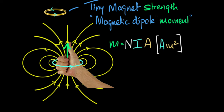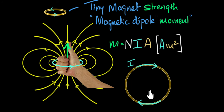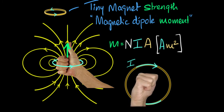Let's try an example. If we have a current carrying loop where the current flows in a particular direction in the plane of the screen, use your right hand: clasp it so the four fingers run in the direction of the current, and you'll find the thumb is pointing inwards. So in this case, the magnetic moment is pointing into the screen. Magnetic moment is a vector quantity.